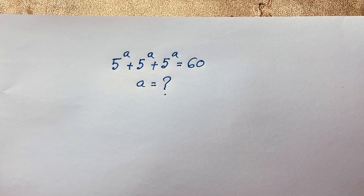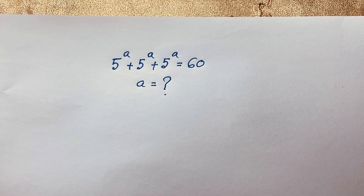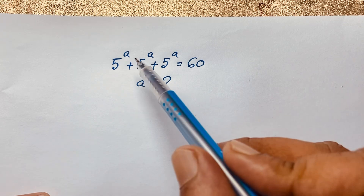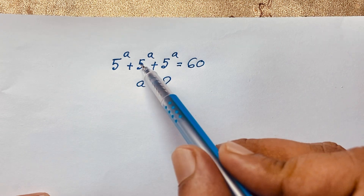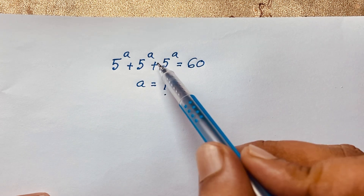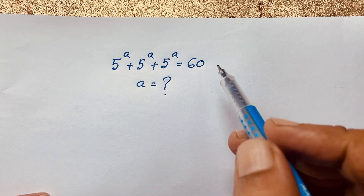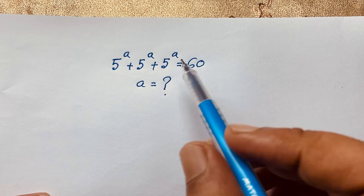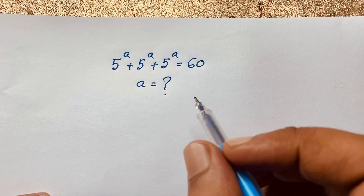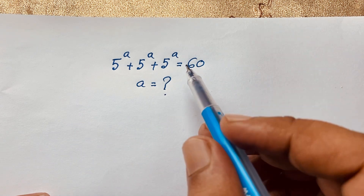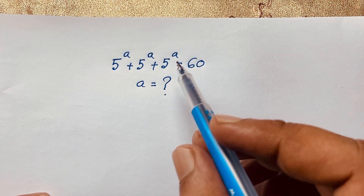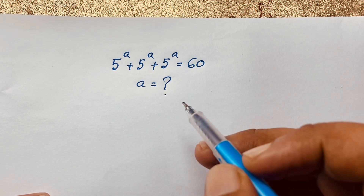Hello everyone. In this video, we have solved a nice exponential math problem: 5 to the power A plus 5 to the power A plus 5 to the power A is equal to 60. We will find out what is the value of A in this math problem.